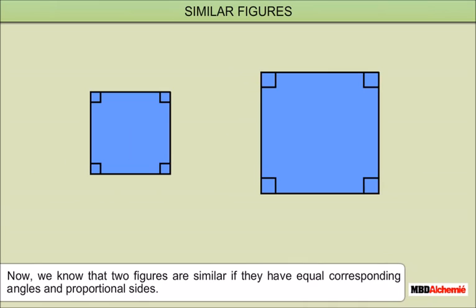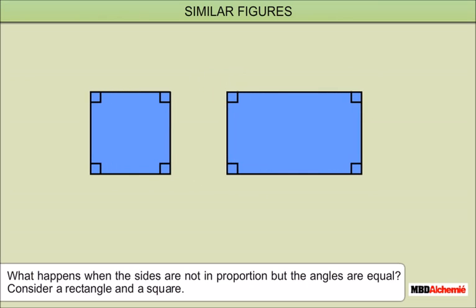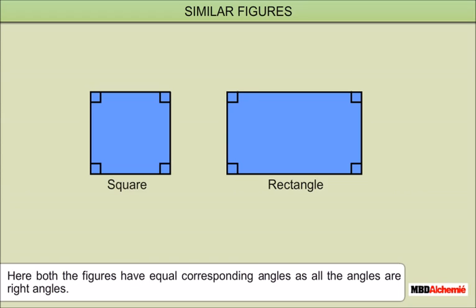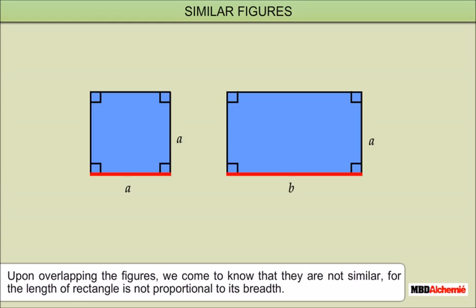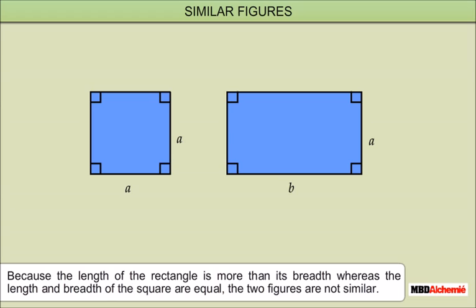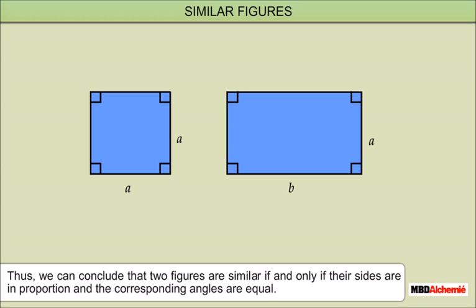Two figures are similar if they have equal corresponding angles and proportional sides. Consider a rectangle and a square: both figures have equal corresponding angles as all angles are right angles. However, upon overlapping the figures, we find they are not similar, because the length of the rectangle is not proportional to the length of the square — the length of the rectangle is more than its breadth, whereas the length and breadth of the square are equal. Therefore, the two figures are not similar.